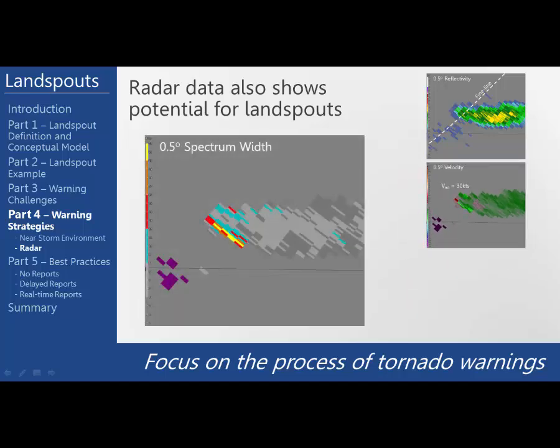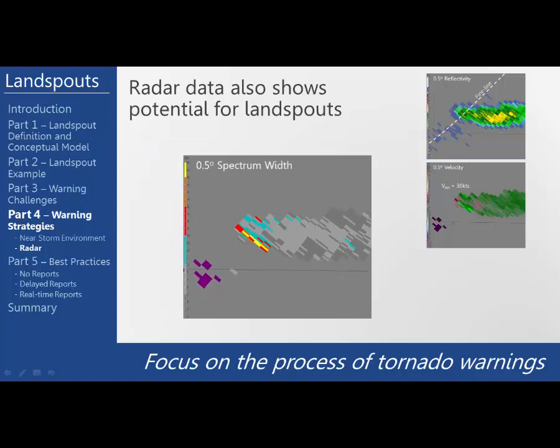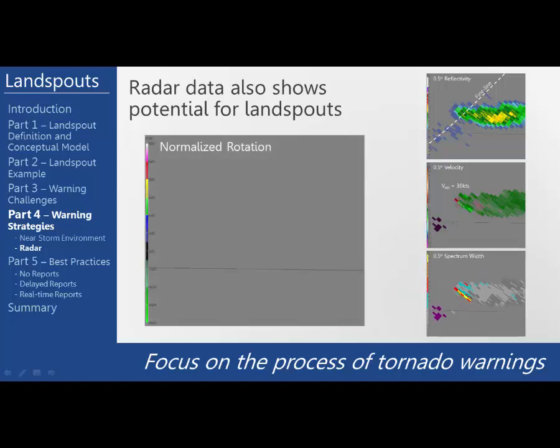Spectrum width can be useful for identifying areas of high signal return variability, which can be used to identify potentially small-scale circulations that don't fill the beam width entirely, but has to be used in conjunction with everything else. If you're using GR2 Analyst, you may be familiar with normalized rotation — in this case, the normalized rotation was non-existent the entire event. Rotational velocity and normalized rotation are tools that diagnose mesocyclone strength to indirectly infer tornado-scale intensity, since the 88D can't directly resolve these scales of motion. This leads to a major fail point for both indices with landspout events since they obviously don't have mesocyclones. Once forecasters recognize landspout environments, they shouldn't be wasting time looking at rotational velocity or normalized rotation to aid in the tornado warning decision-making process.